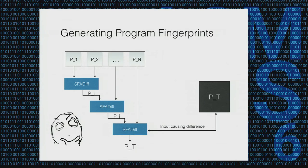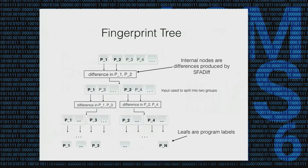We can also do this offline by creating a fingerprint tree, starting from the root and querying the target server for inputs causing a difference, then splitting the remaining programs depending on their behavior on that specific input. This gives a simple way to make a few queries to the target server and figure out which program is running.